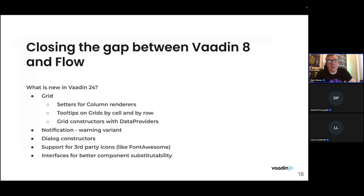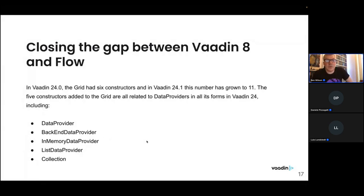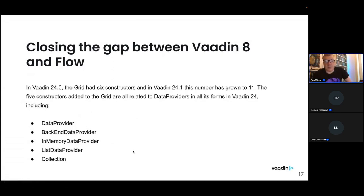Next, grid constructors with data providers. In Vaadin 8, constructors could contain data providers as a developer convenience — you don't have to set the data provider with a separate setter. In Vaadin 24.1, we've added constructors that take data providers as well as collections, providing more equivalence at that level.